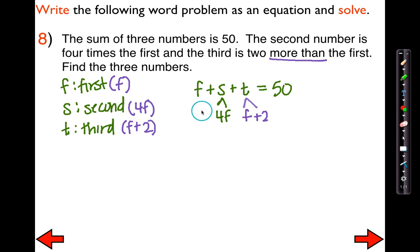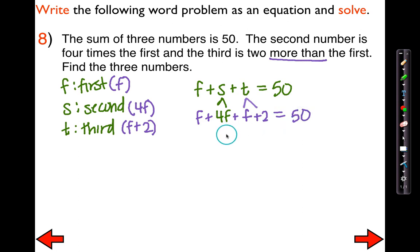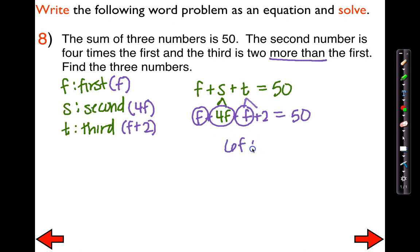Bringing everything down: F plus 4F, which was replaced for the second, plus F plus 2, which replaced the third, equals 50. I can't distribute, but I can combine like terms. I have one F, 4F, and another F — a grand total of 6F. So we have 6F plus 2 equals 50. I'm going to get rid of the constant — subtracting 2 from both sides gives 6F equals 48.